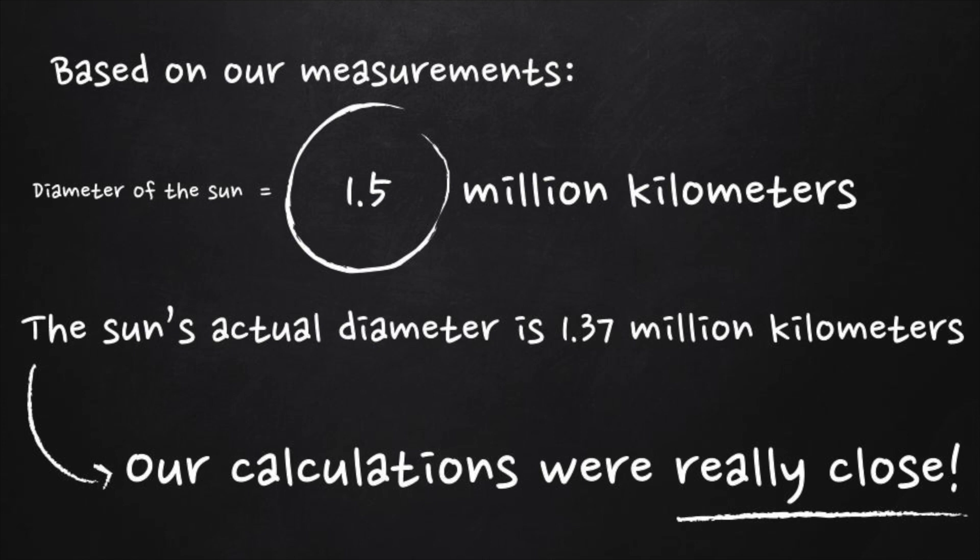Based on our measurements, I calculated the sun's diameter to be 1.5 million kilometers. Considering that the sun's actual diameter is 1.37 million kilometers, we are really close. For a simple tool that I built, I think that it's a great estimation on the size of the sun.